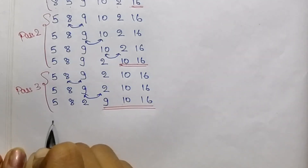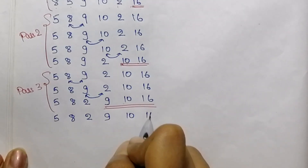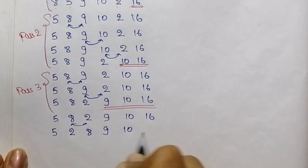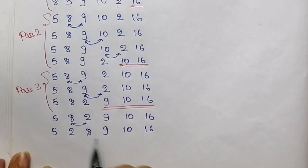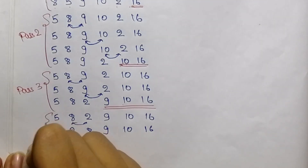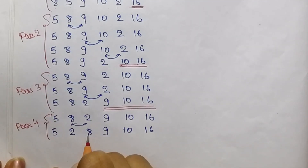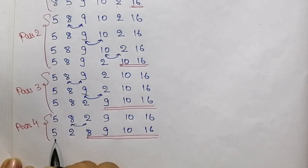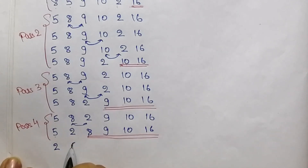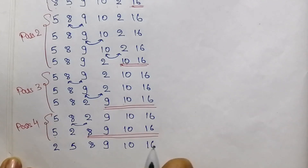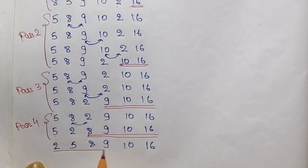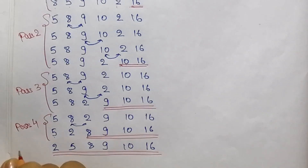Now in the fourth pass, we will compare 5 with 8 — no need of swapping. Then 8 is compared with 2; we need to swap them as 8 is greater than 2. We do not need to compare 8 with either 9, 10, or 16 as these elements are already in sorted order. This is pass 4, and the last 4 elements got their sorted position. In the last pass, we will compare the first 2 elements. As 5 is greater than 2, so we will swap both elements. No need of comparing 5 with any other element because these are already sorted. So in this pass, all elements of the array are sorted. This is pass 5.